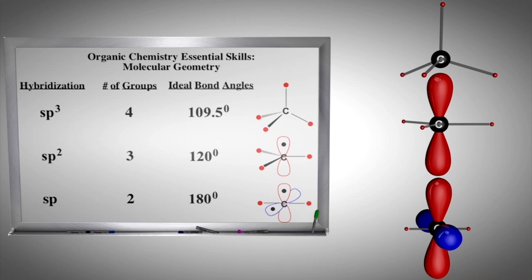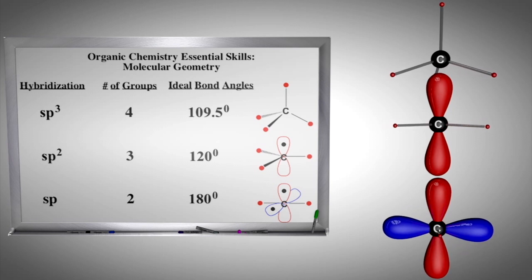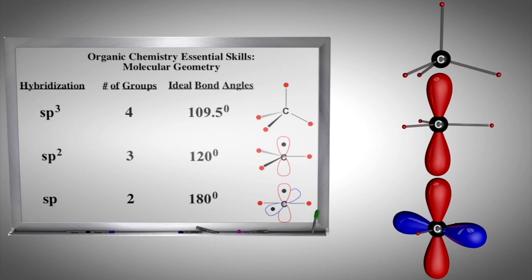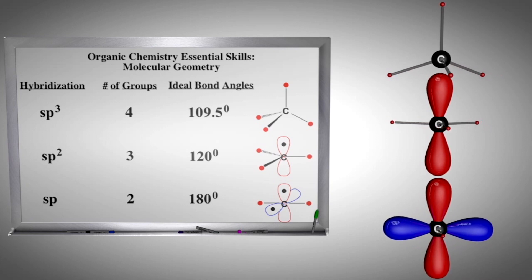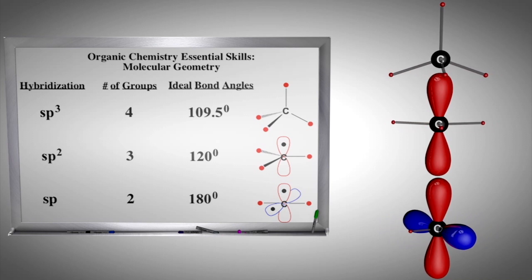A group is defined as another atom or a lone pair. When an atom is surrounded by four, three, or two groups, it will adopt the sp3, sp2, or sp hybridization, respectively. A helpful way to remember this is by adding the exponents together, and that should equal the number of groups around the hybridized atom.